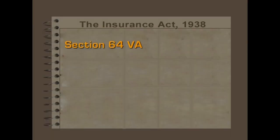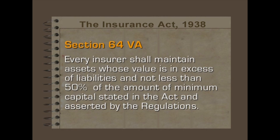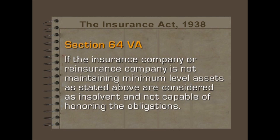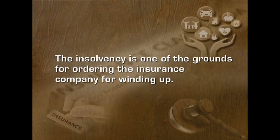Section 64VA of the Insurance Act 1938 states that every insurer shall maintain assets whose value is in excess of liabilities and not less than 50% of the amount of minimum capital stated in the Act and asserted by the regulations. If the insurance company or reinsurance company is not maintaining the minimum level of assets as stated above, they are considered insolvent and not capable of honoring the obligations. Insolvency is one of the grounds for ordering the insurance company for winding up.